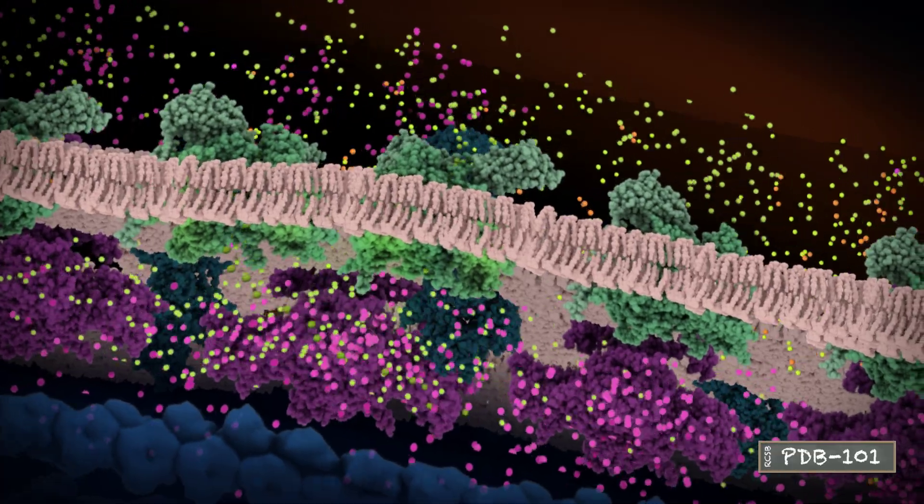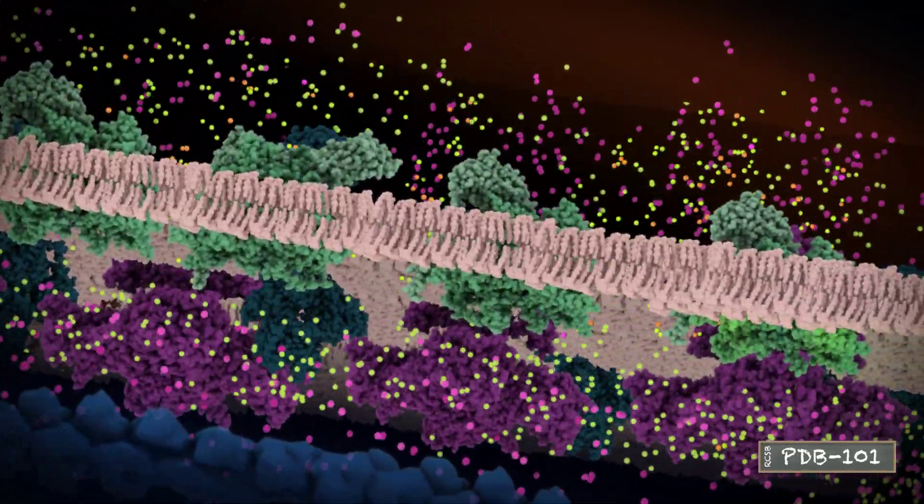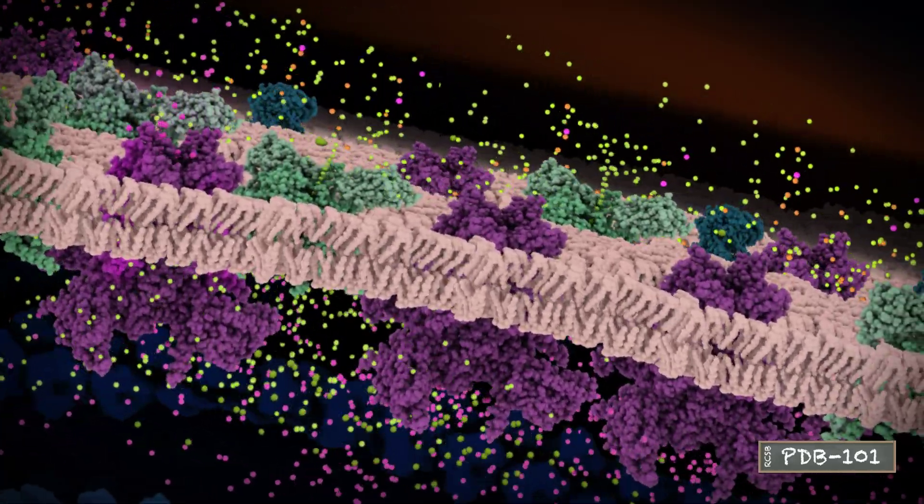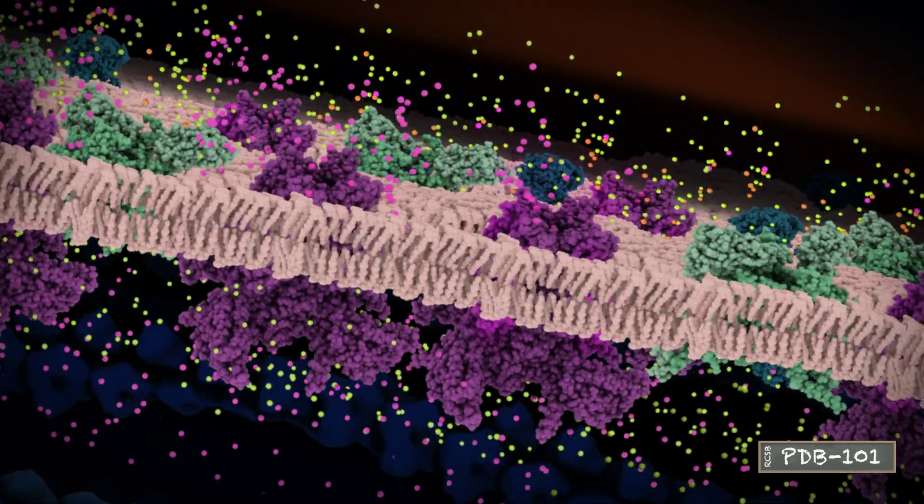In this way, the signal travels along the neuron. Sodium channels open and trigger one another to generate action potentials, and potassium channels prime the neuron for the next signal by allowing potassium to exit.